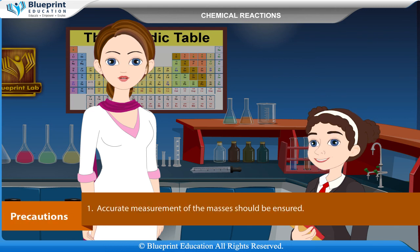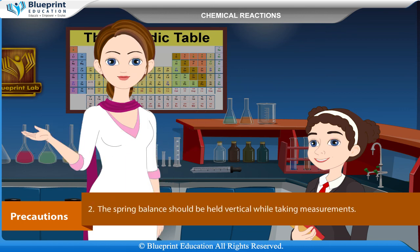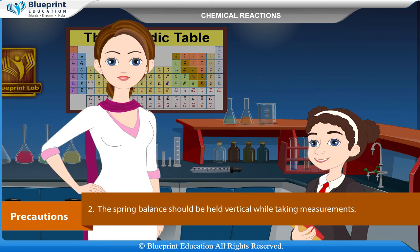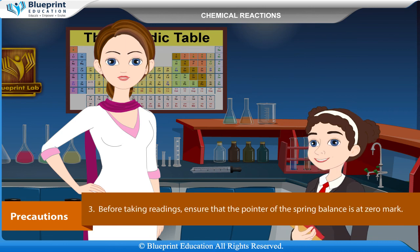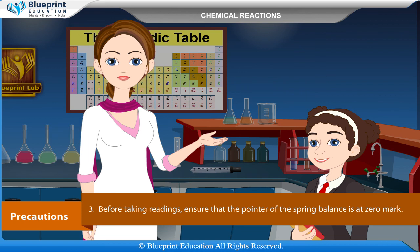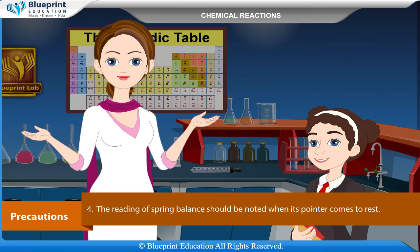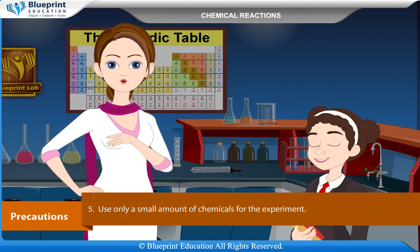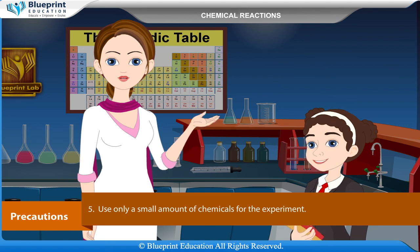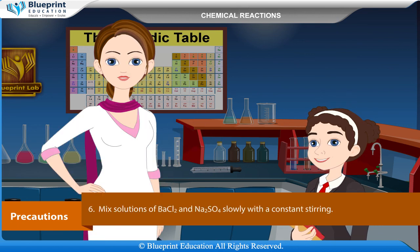Precautions: Accurate measurement of the masses should be ensured. The spring balance should be held vertical while taking measurements. Before taking readings, ensure that the pointer of the spring balance is at zero mark. The reading of the spring balance should be noted when its pointer comes to rest. Use only a small amount of chemicals, and mix solutions of barium chloride and sodium sulfate slowly with constant stirring.